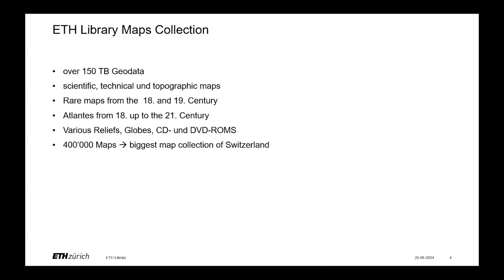The maps collection has over 150 terabytes of geodata, shown through GeoVit — another platform of ETH Library. We collect scientific, technical, and topographic maps, including rare maps from the 18th and 19th century, atlases up to the 21st century, various reliefs, globes, CDs and DVDs. In total, that results in over 400,000 maps, making us the biggest map collection in Switzerland.